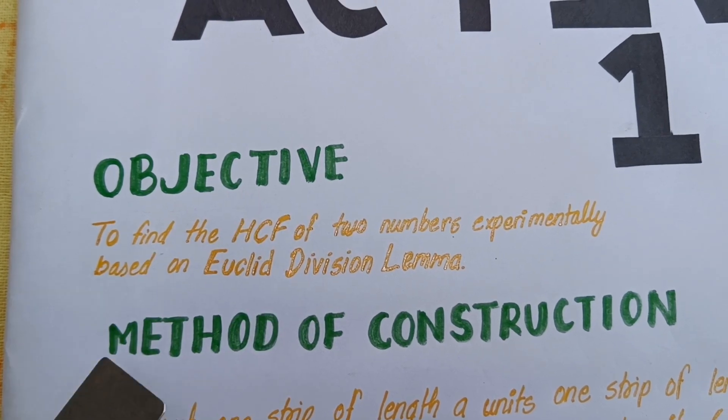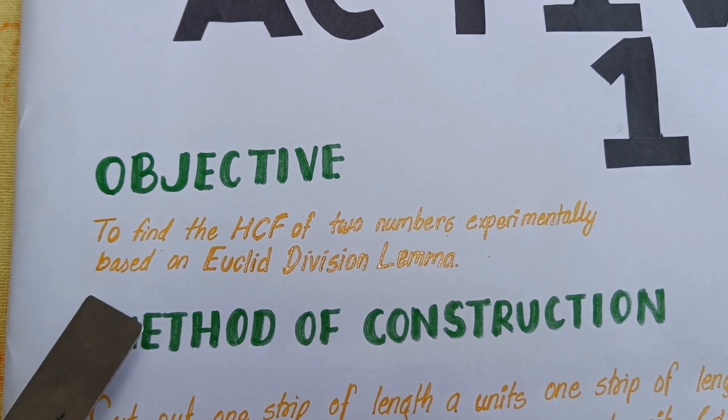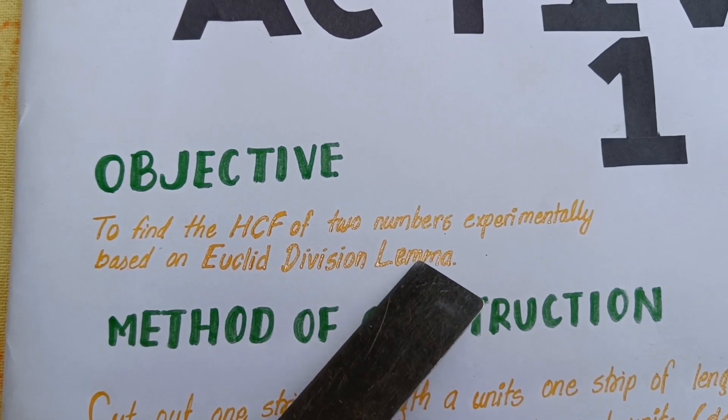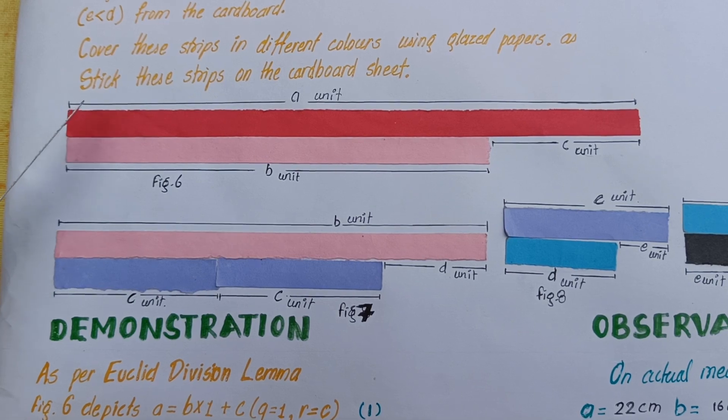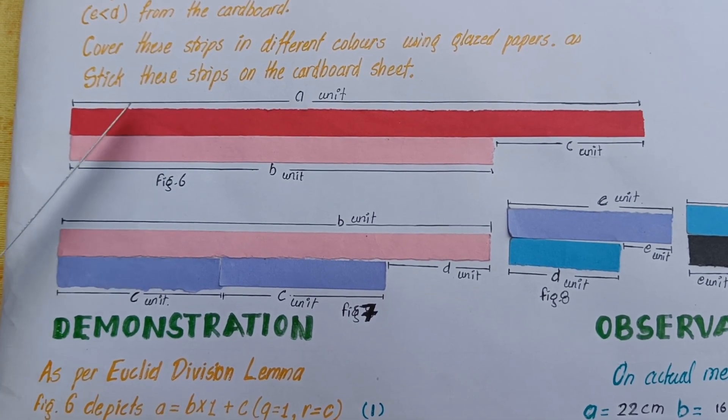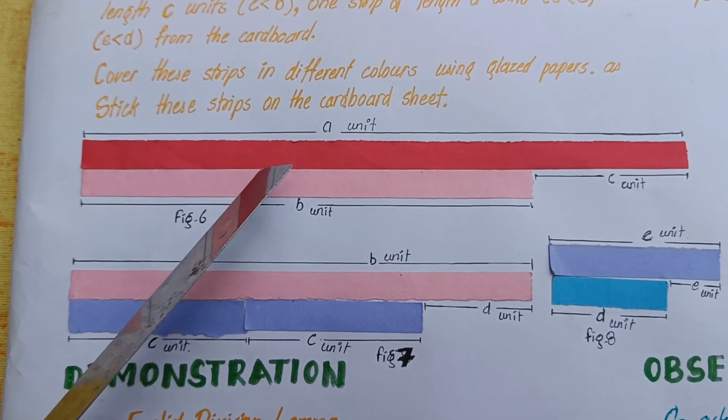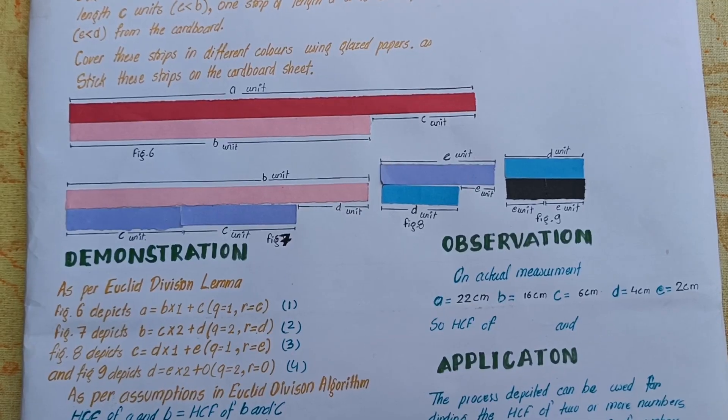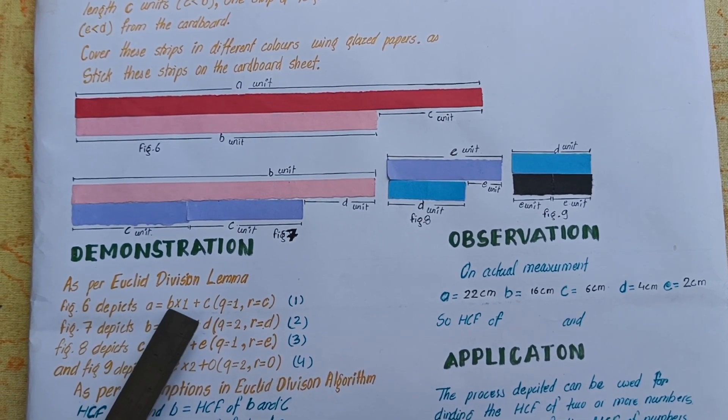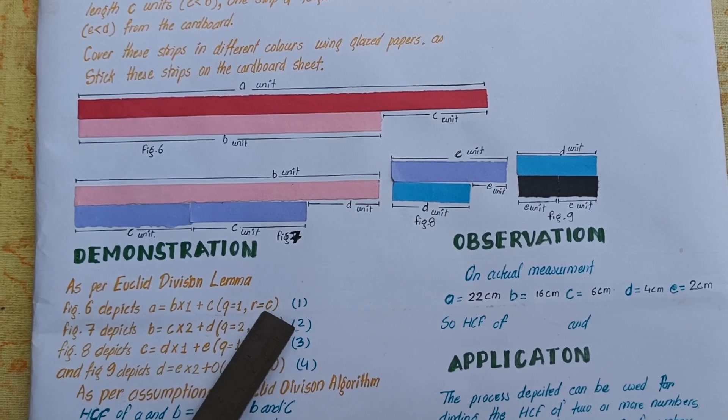The objective of this activity is to find the HCF of two numbers experimentally based on Euclid's division lemma. We want to find HCF of two numbers A and B, where A is greater than B. If we divide A by B, the remainder is C. It means A equals 1 times B plus C. Here 1 is the quotient and C is the remainder.